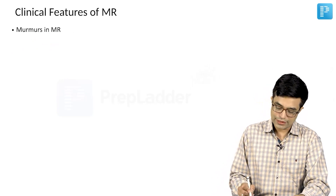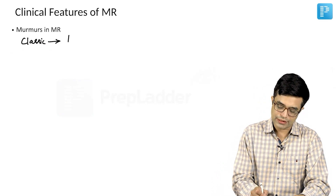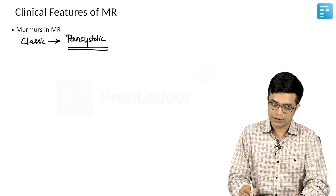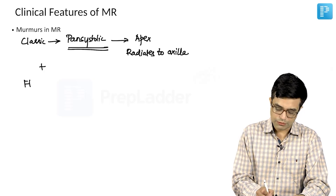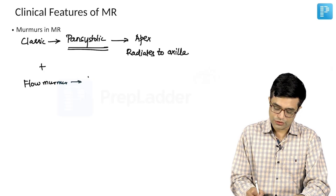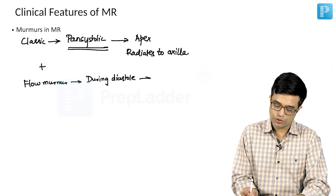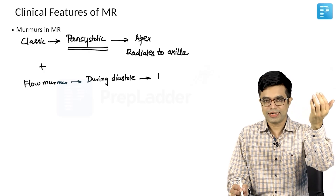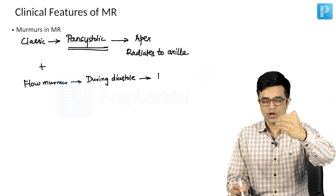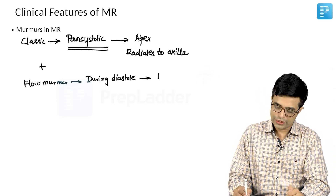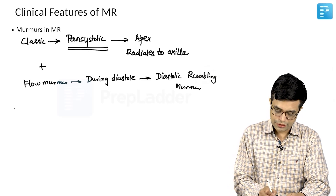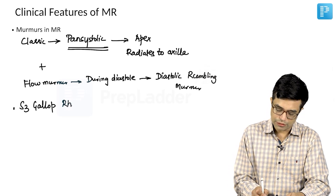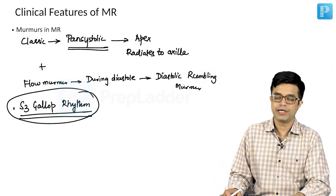Murmurs in mitral regurgitation: the hallmark murmur is a holosystolic or pansystolic murmur, best heard at the apex and radiating to the axilla. In addition, a flow murmur may also be found — during diastole, extra blood that has gone into the left atrium tries to pass through the normal mitral valve, causing a diastolic rumbling murmur. You can also find an S3 gallop rhythm, particularly if CCF is going to develop.